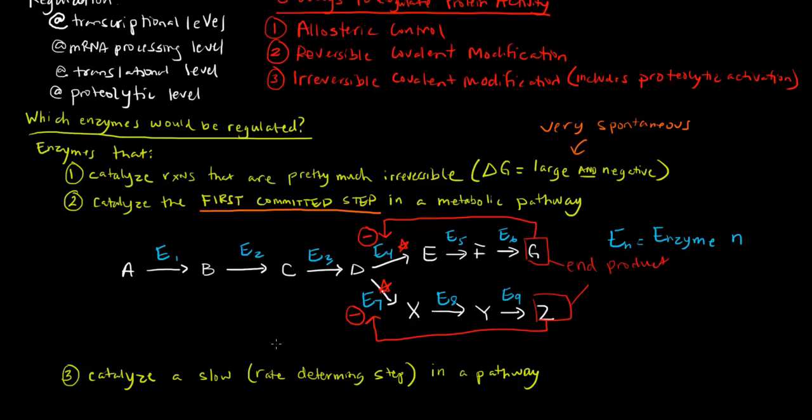The last thing is that if an enzyme catalyzes a slow step in a pathway or the rate-determining step, then because it determines the rate at which that reaction goes, we want to regulate that enzyme. I want you to keep these three ideas in mind, but mostly these first two are the most important. We'll mention this, especially the idea of a first committed step, later when we talk about glycolysis. I hope that was helpful in introducing you to enzyme regulation.